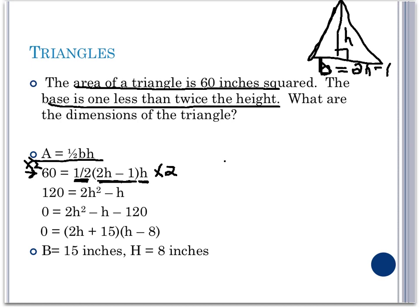We can simplify this equation by multiplying both sides by 2. And we will get 2 times 60, or 120, is equal to one half times 2, which is 1. So we're left with 2h minus 1 times h.